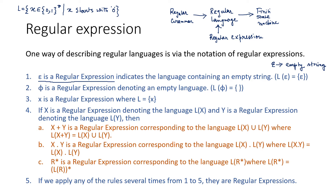The idea of the empty string will become clearer when we study finite state machines. Point number three: if x is a symbol, then x is a regular expression where L(x) = {x}. That is, a single symbol x represents a regular expression, and the language generated from it will be L = {x}.